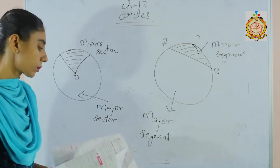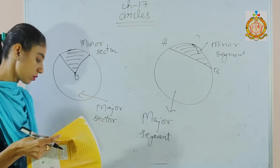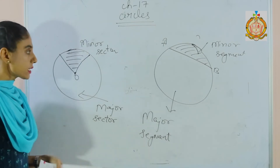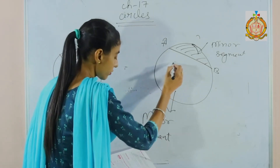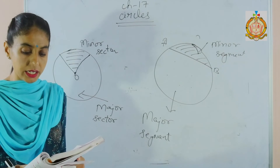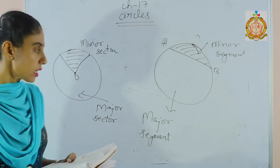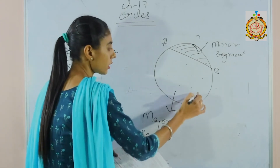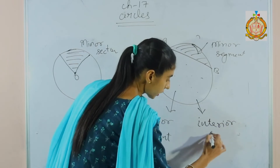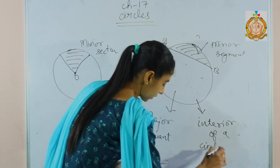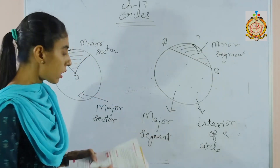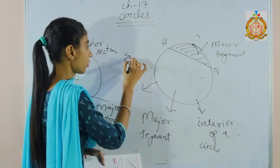Next is the interior and exterior of a circle. The set of points whose distance from the center is less than the radius, or the set of points that lie inside the circle, is called the interior of the circle. Those points outside the circle are called the exterior of the circle.